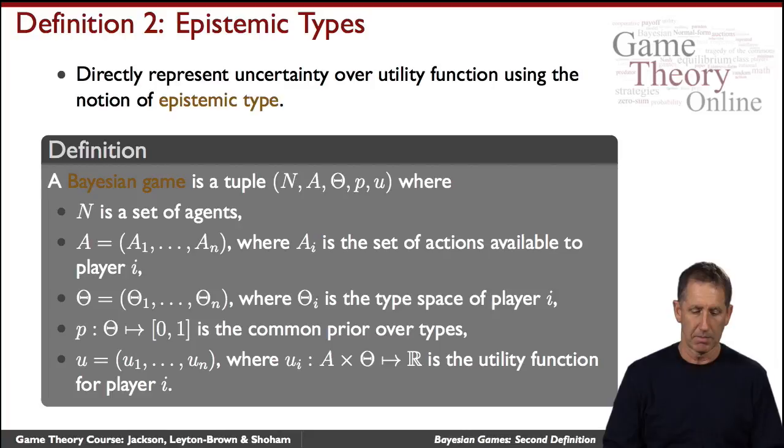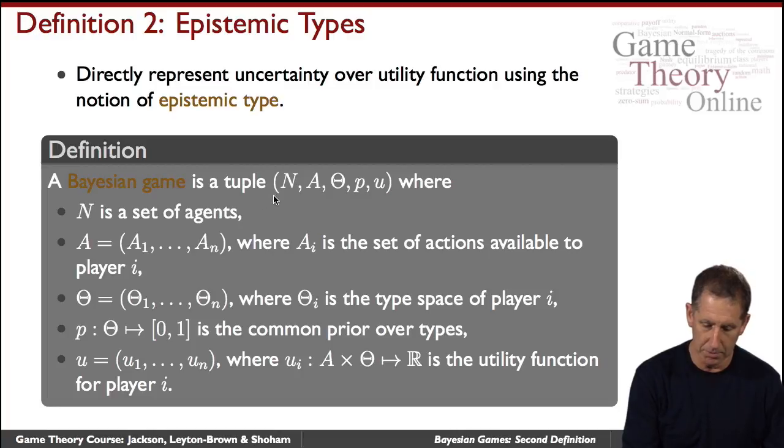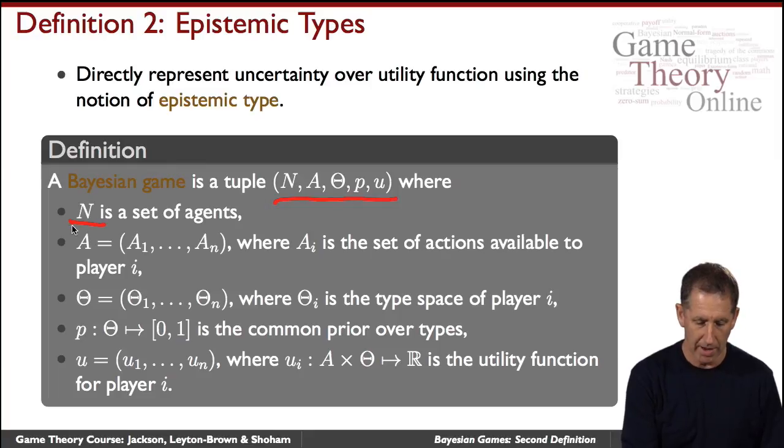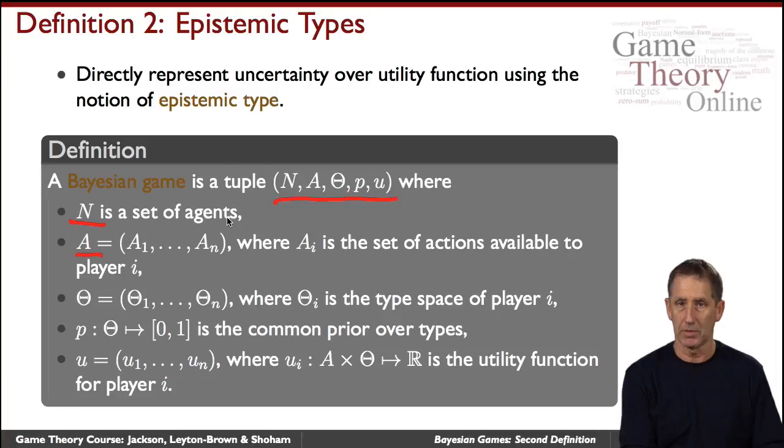Formally speaking, then, the Bayesian game is defined as follows. It's defined as this tuple. We have a set of agents. We have the actions available to the agent. So now we don't have sets of games. We have very directly the actions available to the agent.